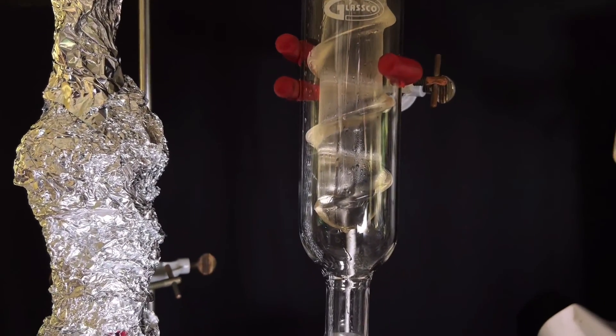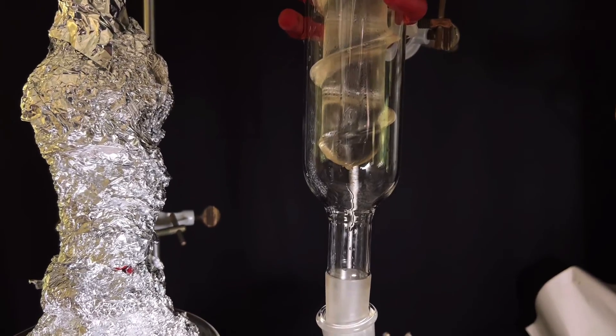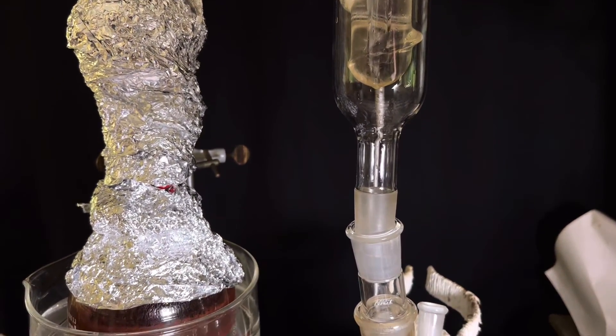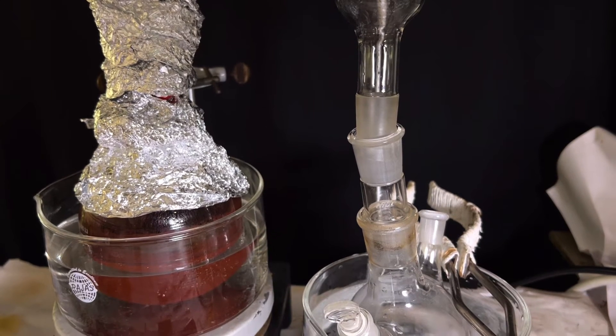When the water bath is gently heated, methyl iodide quickly makes it over and drips down the condenser column. You can clearly see that the temperature has reached 42 degrees C.